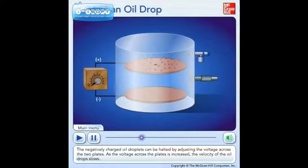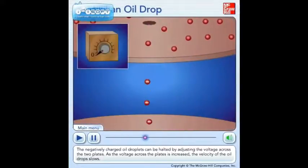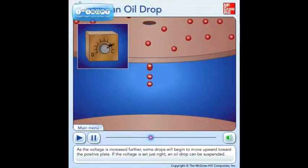The negatively charged oil droplets can be halted by adjusting the voltage across the two plates. As the voltage across the plates is increased, the velocity of the oil drops slows. As the voltage is increased further, some drops will begin to move upward toward the positive plate. If the voltage is set just right, an oil drop can be suspended.